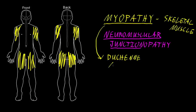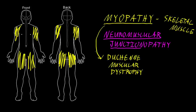Duchenne muscular dystrophy usually affects young boys and it's caused by a gene mutation on the X chromosome that causes the gradual loss of skeletal muscle cells.